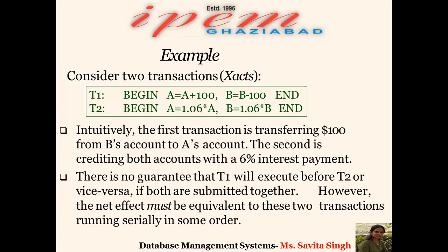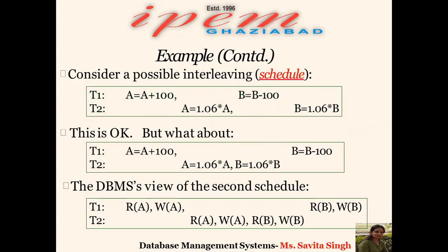Let's take an example with two transactions T1 and T2. In T1 we are adding 100 to account A and subtracting 100 from account B. In T2 we are crediting both accounts A and B with a 6% interest payment. It is not guaranteed whether T1 will execute first or T2 will execute first, and the order of execution will affect our schedule.